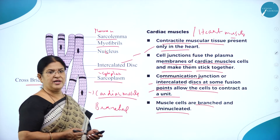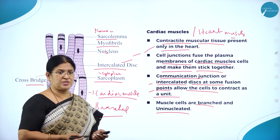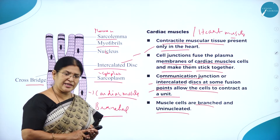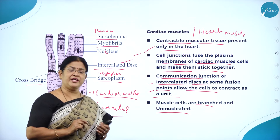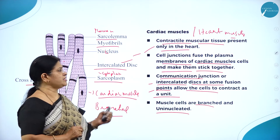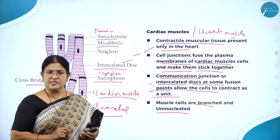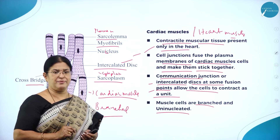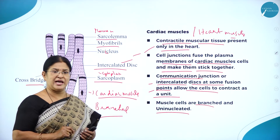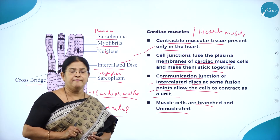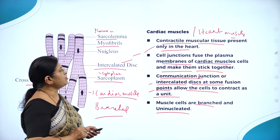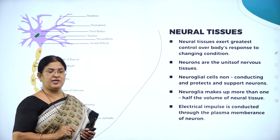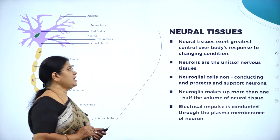That covers all about muscular tissue. Imagine how important all tissues are — whether epithelial tissue, connective tissue, muscular tissue, or the neural tissue which forms the very important nervous system. As we know, tissue is a group of similar cells performing a specific function. Moving on to the next very important and last type of animal tissue — neural tissue.